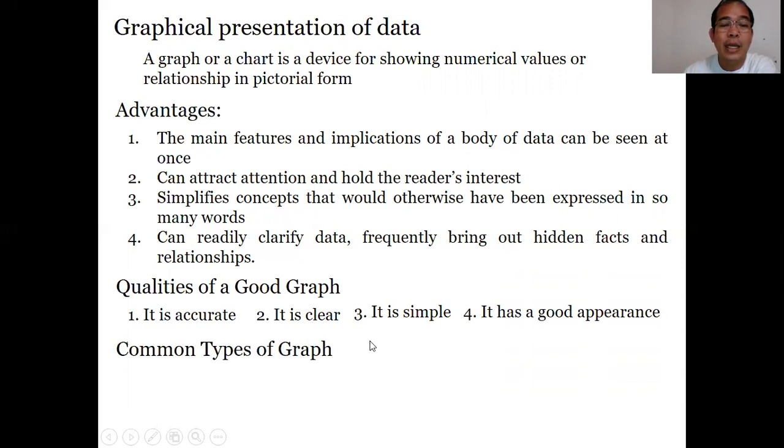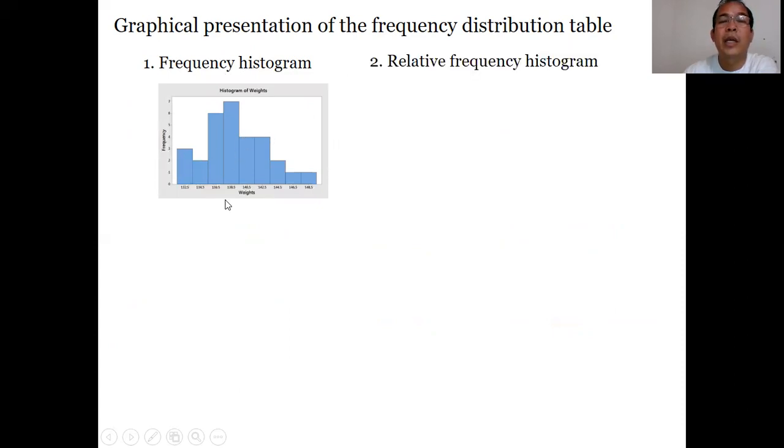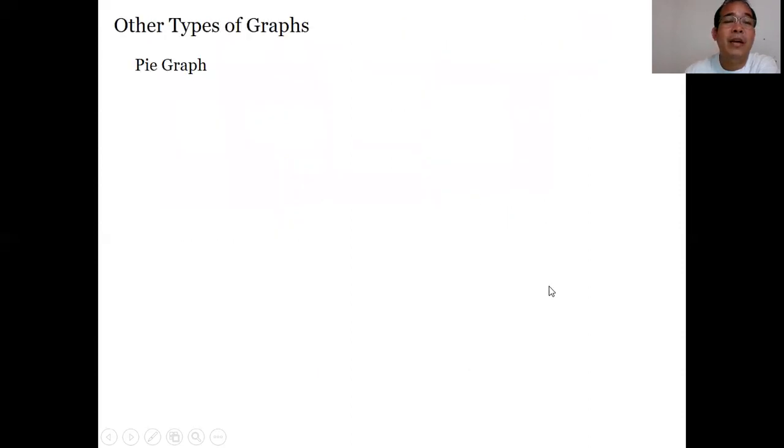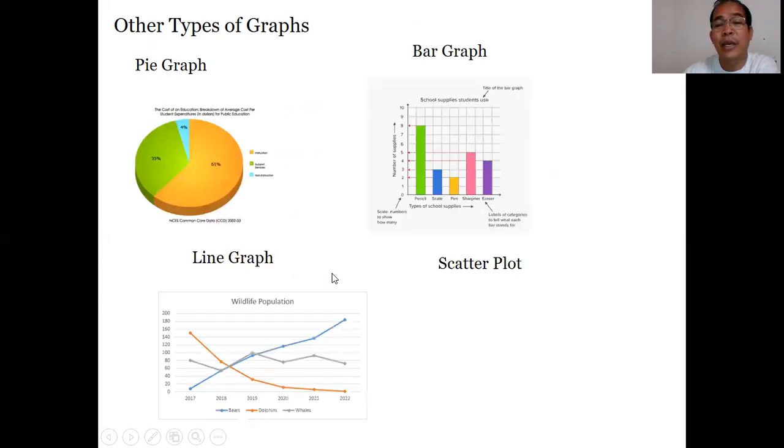Common types of graphs include scatter graph, line graph, pie graph, column graph, and bar graphs. Let's have some illustrations. For frequency histogram, it comes from a frequency distribution table. The relative frequency histogram has entries in percent form. Frequency ogives looks like this. Frequency polygon is that graph. Other types of graphs include pie graph, bar graph, line graph, and scatter plot.